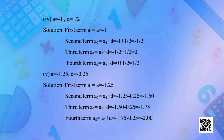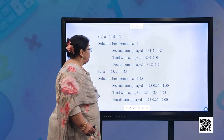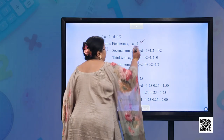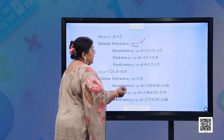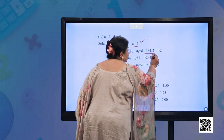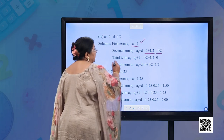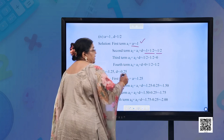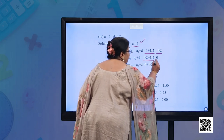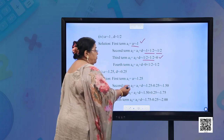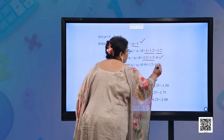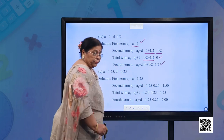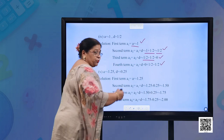Part (d): A = −1, D = 1/2. First term = −1; second term = −1 + 1/2 = −1/2; third term = −1/2 + 1/2 = 0; fourth term = 0 + 1/2 = 1/2. So the four terms are −1, −1/2, 0, 1/2.